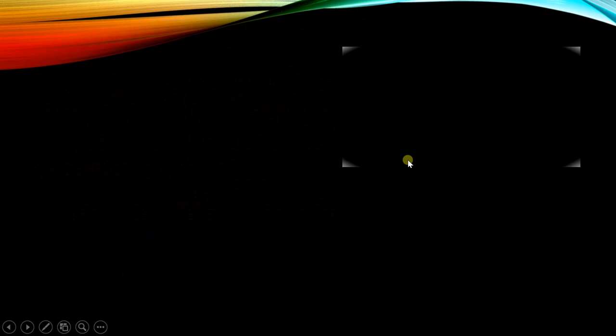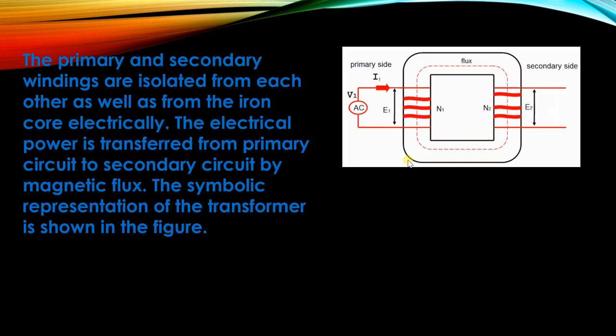The primary and secondary windings are isolated from each other as well as from the iron core electrically. The electrical power is transferred from the primary circuit to the secondary circuit by magnetic flux. This flux is due to the AC supply; because of this AC, the EMF is induced on the primary side, which produces the flux, and in turn E2 is produced on the secondary side — all through electromagnetic induction.